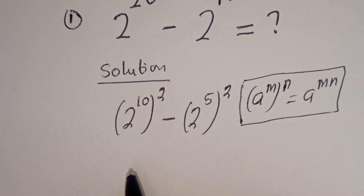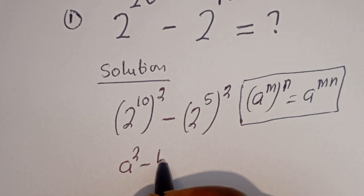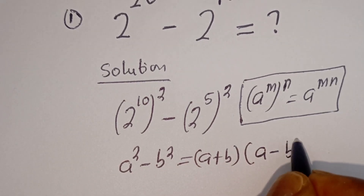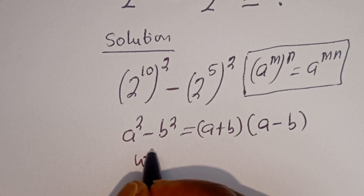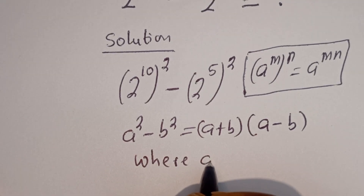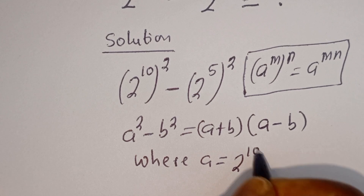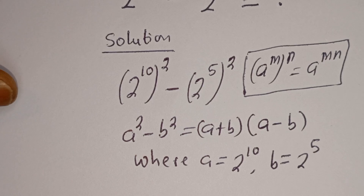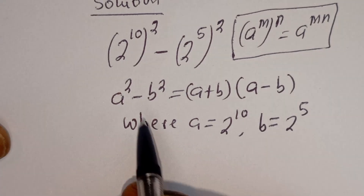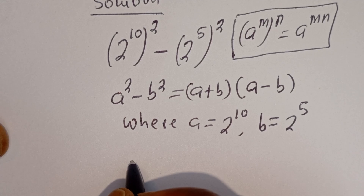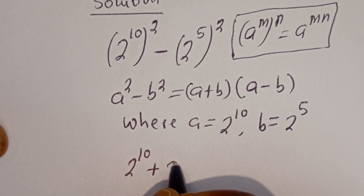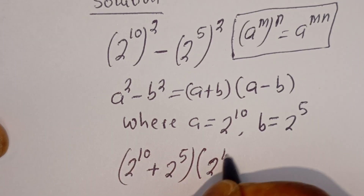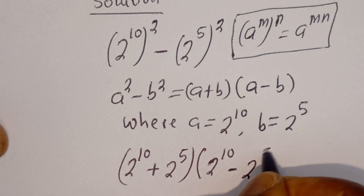If you have a squared minus b squared, this is equal to a plus b, bracket, a minus b. Where a is equal to 2 to the power of 10, and b is equal to 2 to the power of 5. Then this can be written as 2 to the power of 10 plus 2 to the power of 5, bracket, 2 to the power of 10 minus 2 to the power of 5.